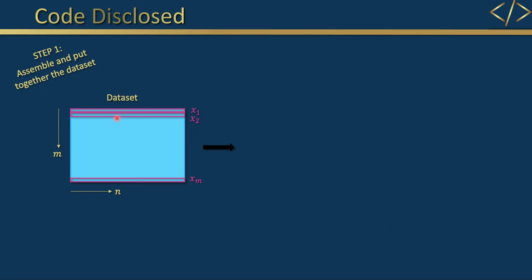Consider your dataset in the general form where you have m rows and n columns, where m doesn't equal n, so your dataset is not square — which is the actual case in real-life datasets. The very first step is to assemble your dataset. If you consider this as an image, each row is a pixel row: x1, x2, up to x of m. Or you can consider each row as a person, with columns representing features like weight, height, gender, etc.